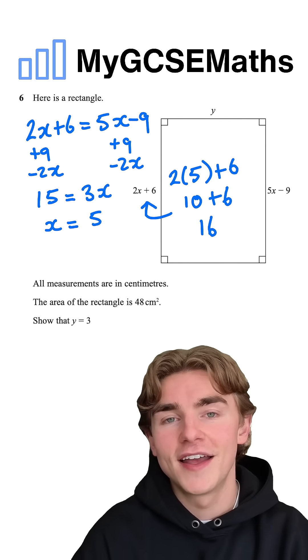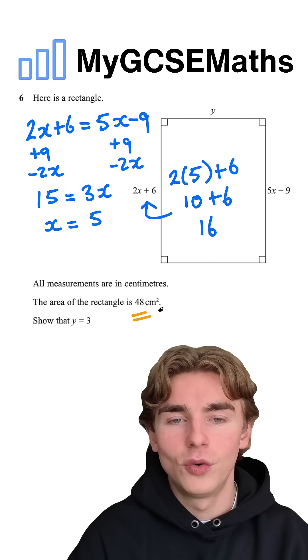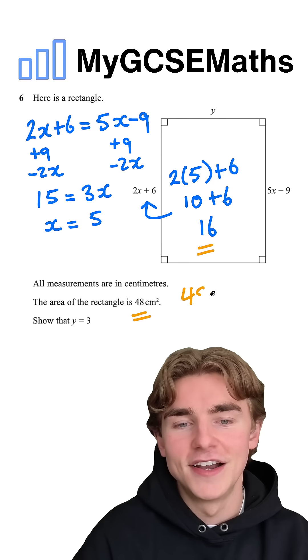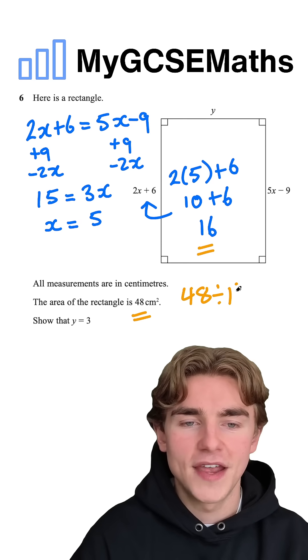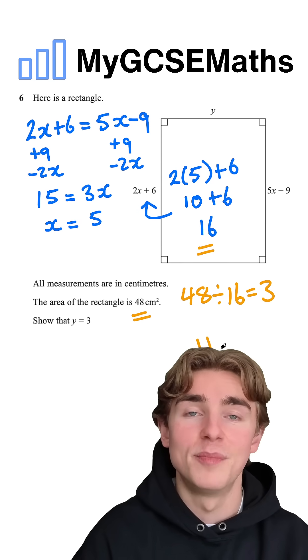Finally, to show that our value of y is 3, we're going to do our area of 48 divided by our height of 16. Luckily it all checks out. 48 divided by 16 is in fact 3, so we know we must be correct.